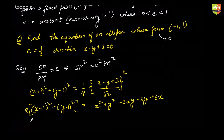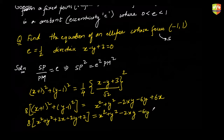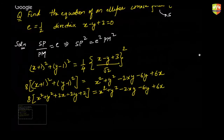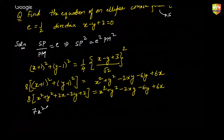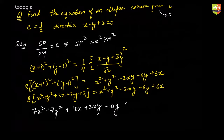Opening the left side: 8(x² + y² + 2x − 2y + 2). Further simplifying, this gives 7x² + 7y² + 2xy + 10x − 10y + 7 = 0. This is your answer for this question.